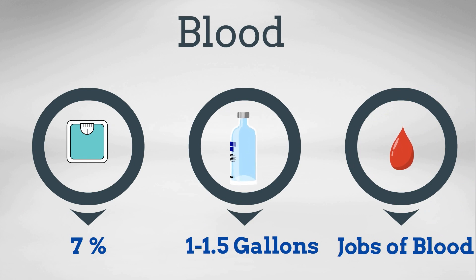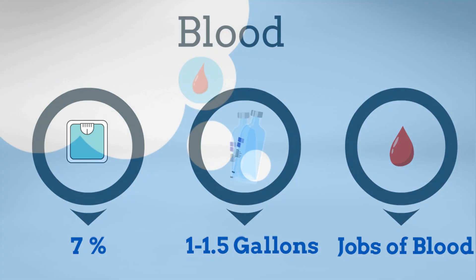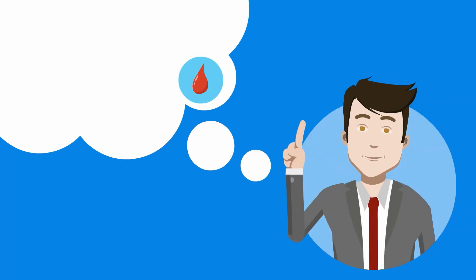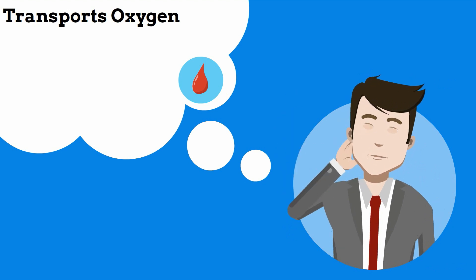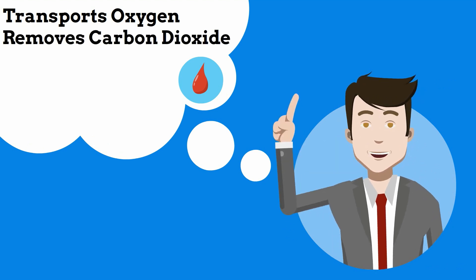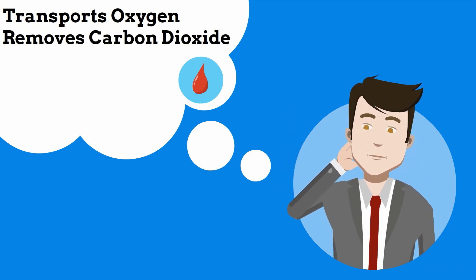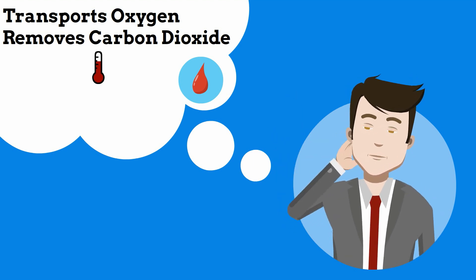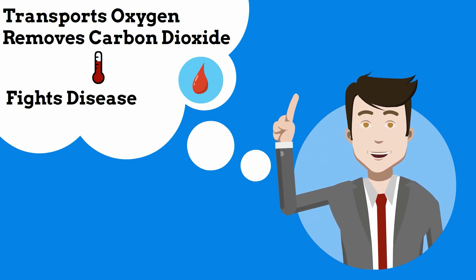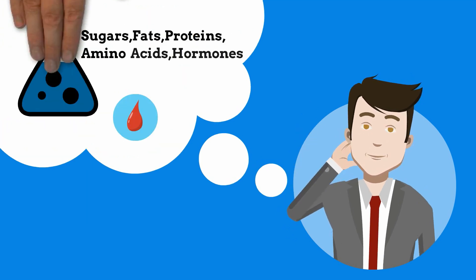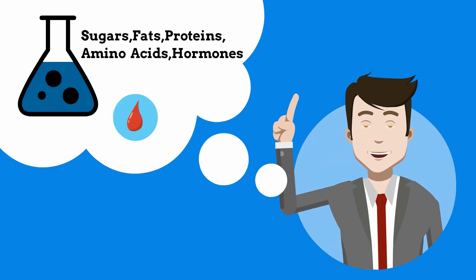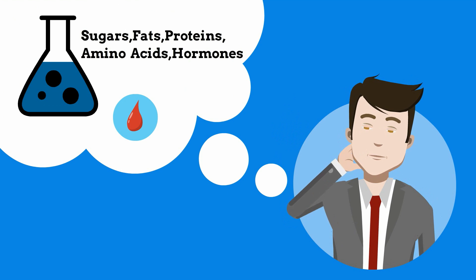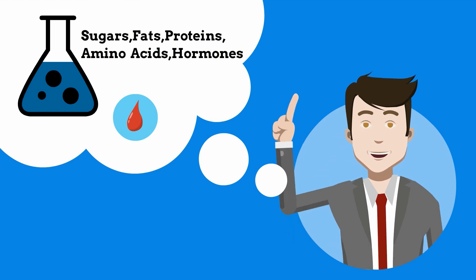Here is a list of some of the major jobs. It transports oxygen to each cell, removes waste material like carbon dioxide, helps regulate your temperature, fights disease, and transports nutrients such as sugar, fats, proteins, amino acids, and hormones.